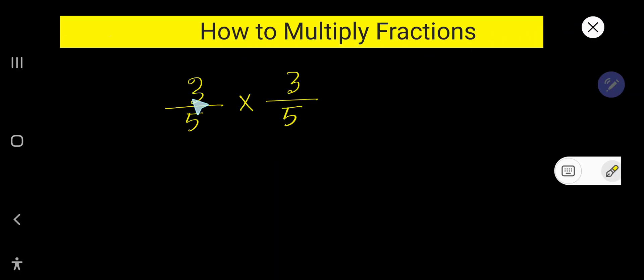How to multiply fractions: 3 over 5 times 3 over 5. To multiply one fraction by another, you need to multiply the top numbers, that is numerator to numerator, and then denominator to denominators, so you are getting here a new fraction.